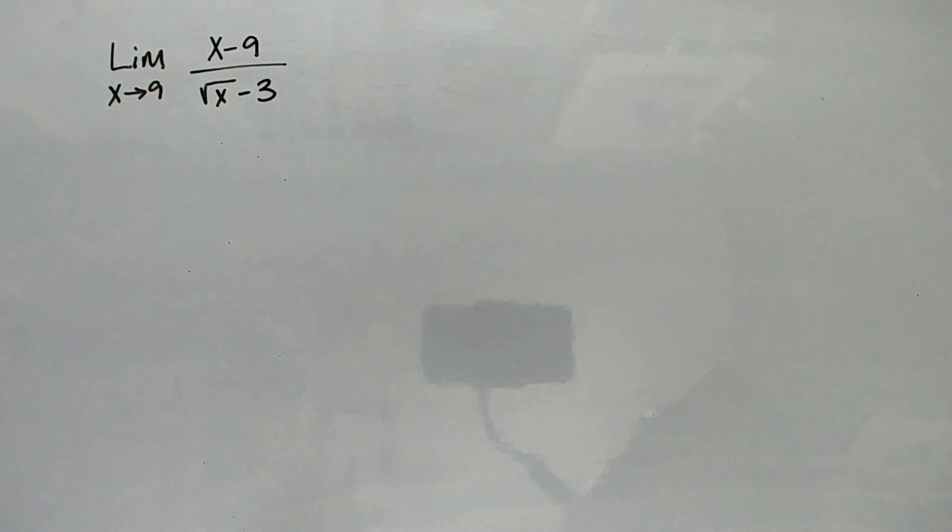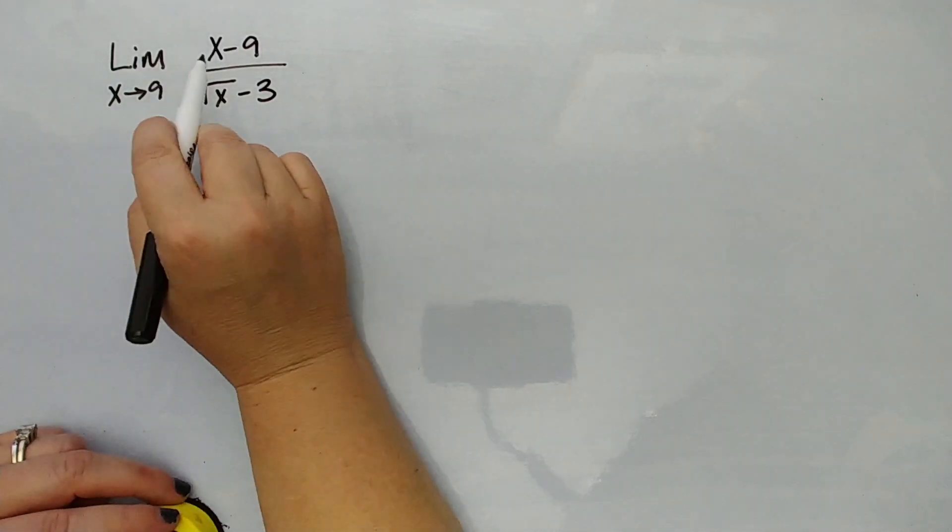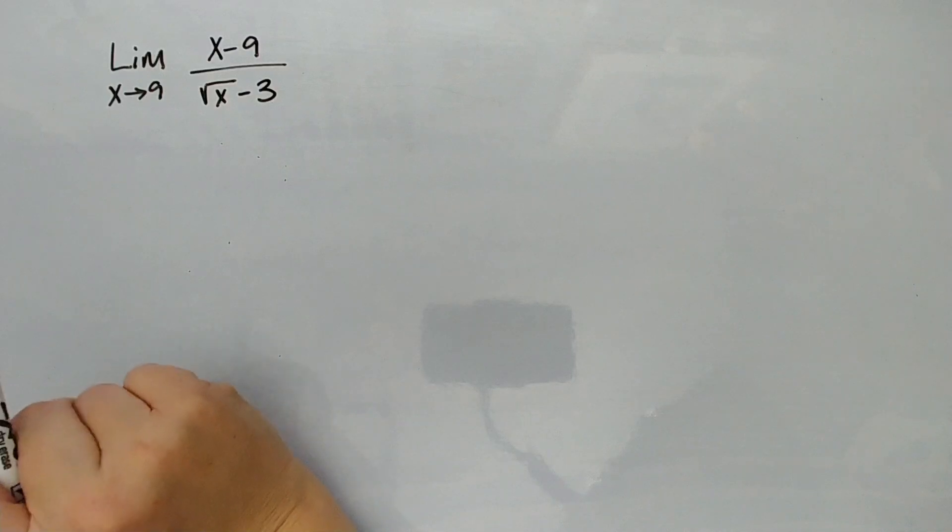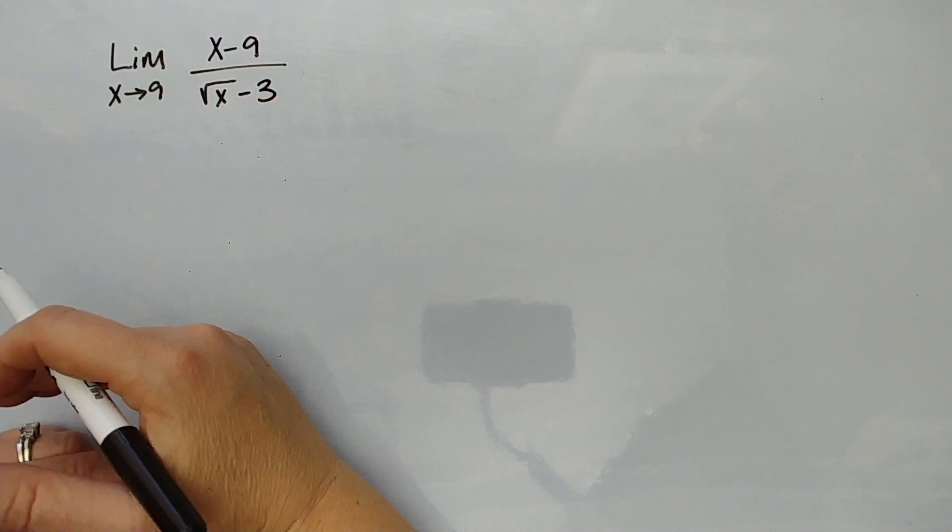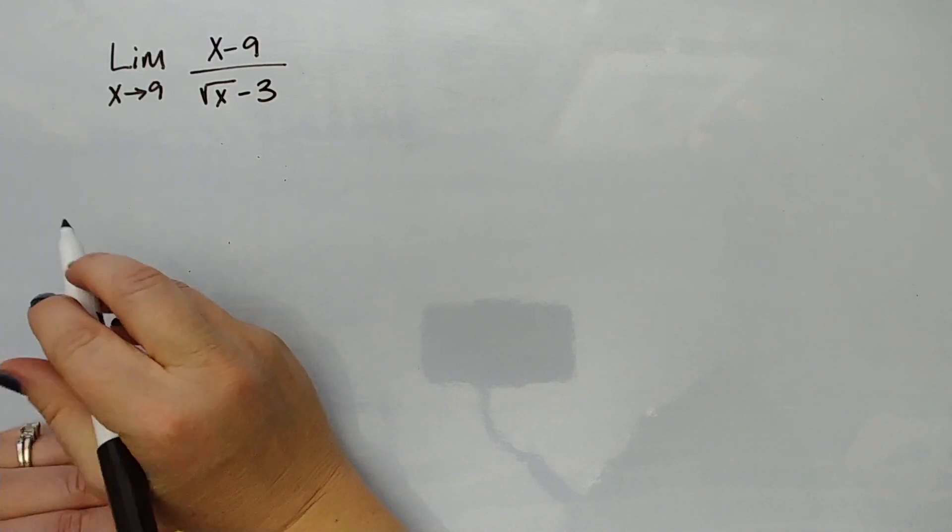It asks us to evaluate the limit as x approaches 9 for (x-9) over the square root of x minus 3. We would be tempted to just plug in 9, and we're going to do that to see what happens. But they usually ask us for the limit at a very interesting point where something is going on in that function that isn't quite normal.